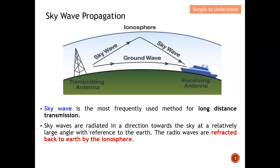Sky waves are radiated in a direction towards the sky at a relatively large angle with reference to the earth. The sky wave travels at a large angle towards the sky to reach the ionosphere before it is finally reflected back to the earth. This is the definition of sky wave propagation.